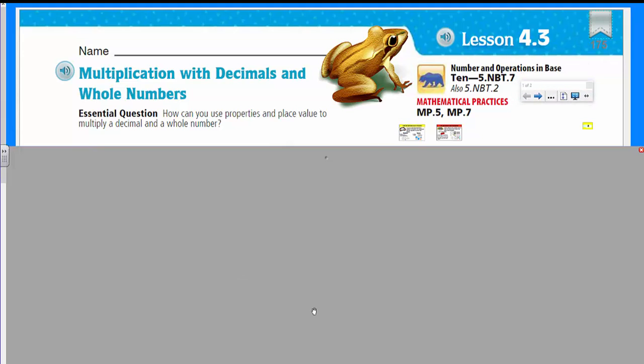Let's get started my friends. Welcome to another math video. We're doing some go math here, Lesson 4.3. That's right. And we're looking at multiplication with decimals and whole numbers. It says the essential question. This is our learning target in essence. How can you use properties and place value to multiply a decimal and a whole number? Well, you know, before we start on with this lesson, I think we need to do something called a little bit of fluency practice.